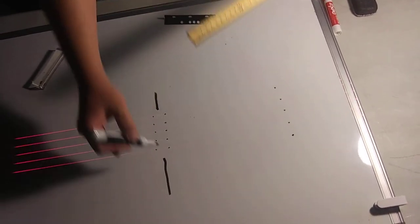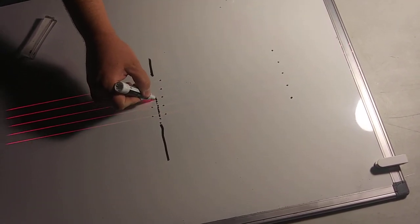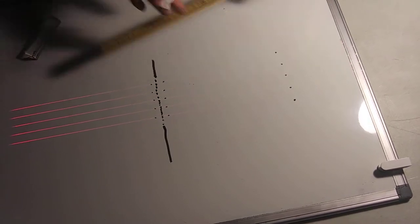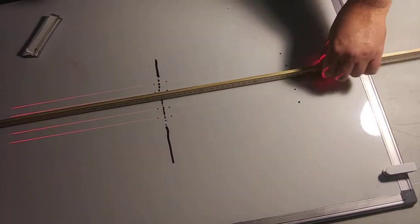So we know this line right here is the optic axis. Sorry, that's not the optic axis, that's the lens. The optic axis is this, right here. Right.